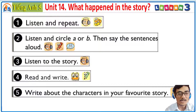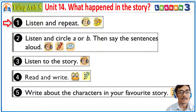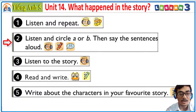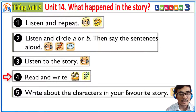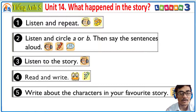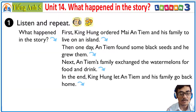There are a lot of things that we have today. We have Activity number 1: Listen and repeat. Activity 2: Listen and circle A or B, then say the sentences aloud. Activity 3: Listen to the story. Activity 4: Read and write. Activity 5: Write about the characters in your favorite story. Okay, let's get the ball rolling.